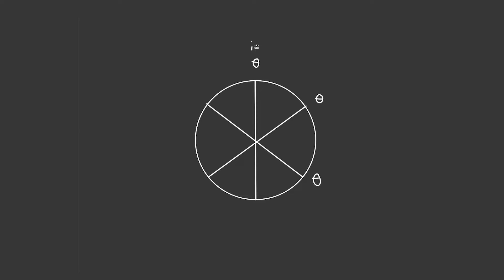When i is equal to zero, theta is one value. When i is equal to one, theta is a different value. When i is equal to two, it is a different value. And this is the same as saying theta times one. When we find our opposite values, we do minus one times theta, which is the same as negative theta. So we're doing negative theta on all of these, and that's what we feed into our sine and cosine.